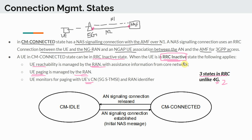In RRC Inactive state, the UE monitors paging, which is managed by the RAN — not the core. Because the UE is in CM Connected, the N1 endpoints are already defined and the UE has a dedicated N1 connection, so paging is managed by the RAN. UE reachability is also managed by the RAN, since the user is known at both the RAN level and the AMF level.